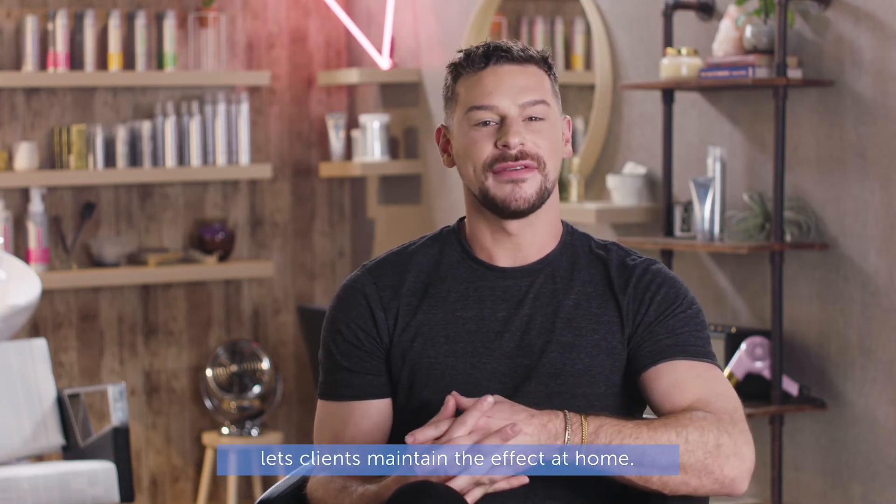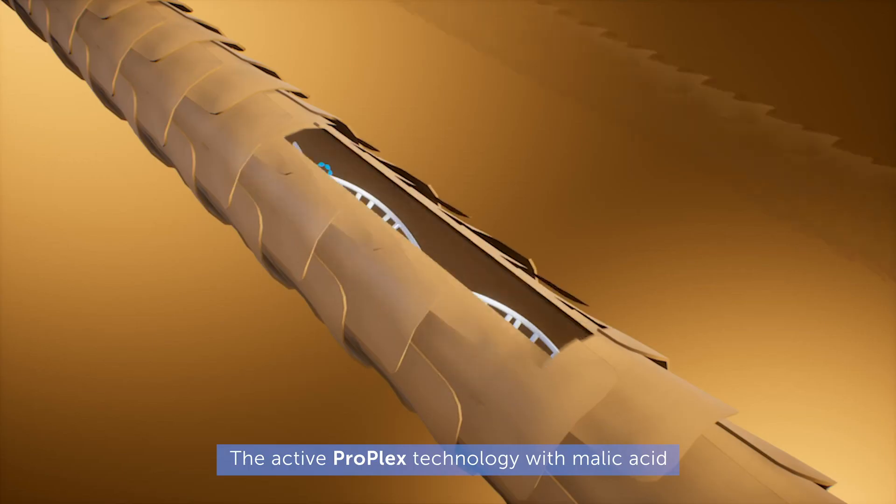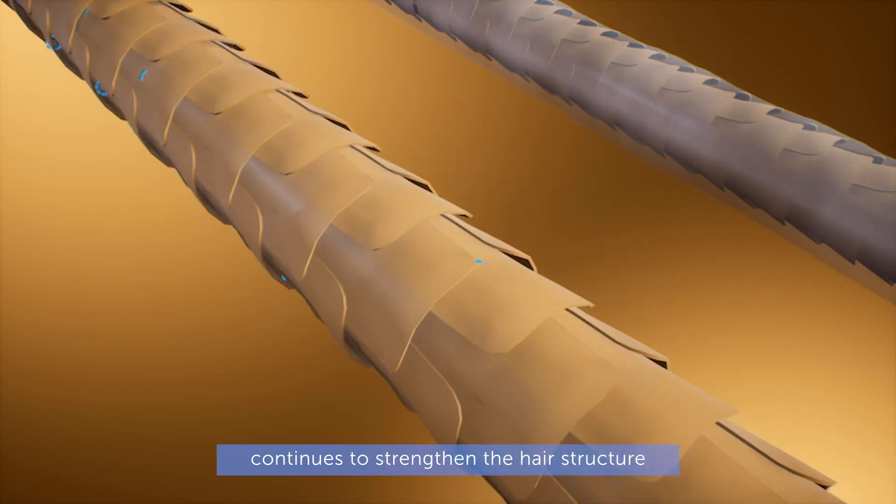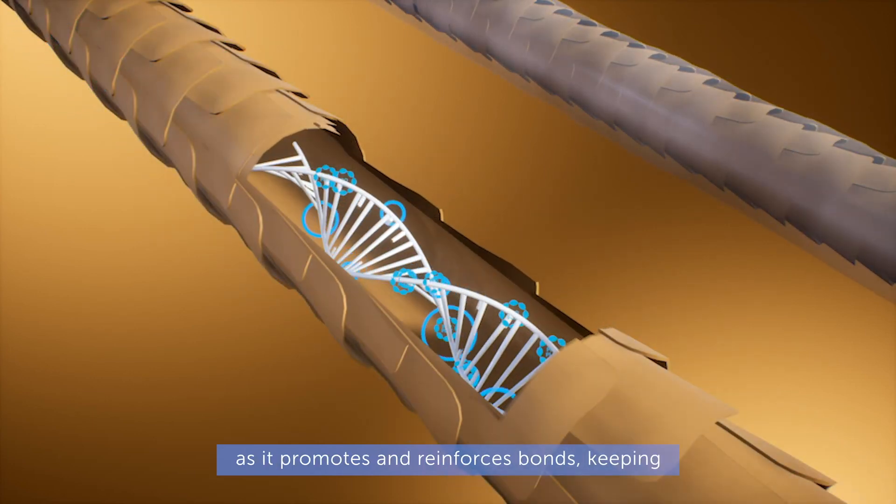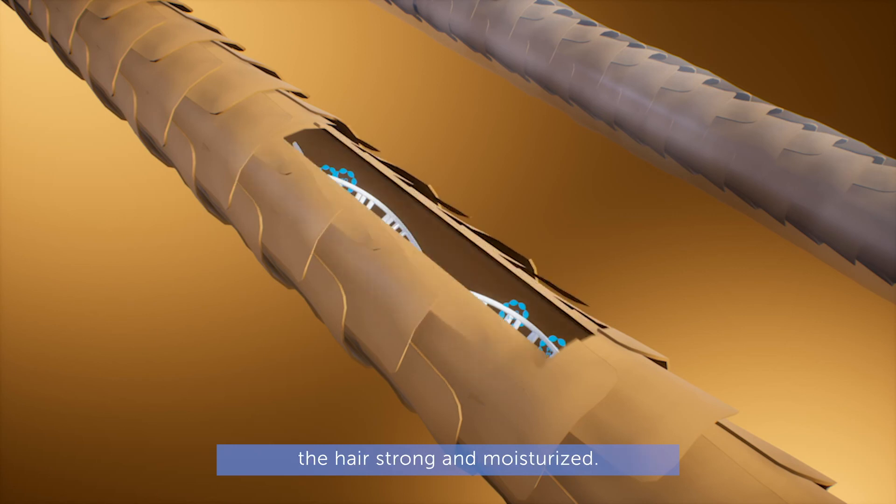Lightplex Bond Retention Mask Number Three lets clients maintain the effect at home. The active ProPlex technology with malic acid continues to strengthen the hair structure as it promotes and reinforces bonds, keeping the hair strong and moisturized.